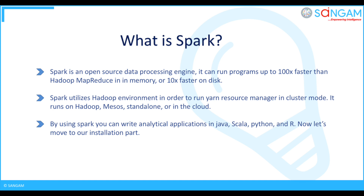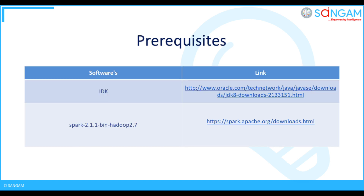Now let's move to our installation part. In order to install Spark you need to have some prerequisites: download and install JDK, and Spark 2.1.1 bin Hadoop 2.7.